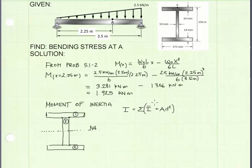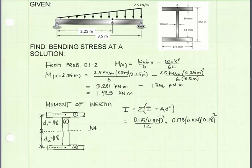So I'm going to begin by finding the moment of inertia and the A d squared value for piece one. I have the moment of inertia for piece number one. It's base times height, the height cubed, divided by 12.